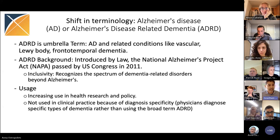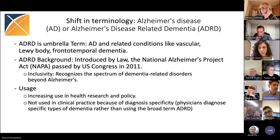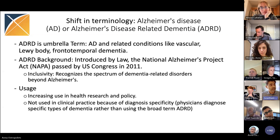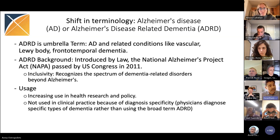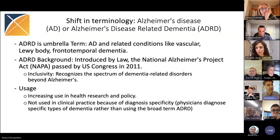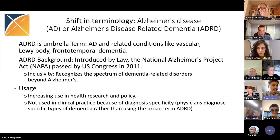What is ADRD? It is an umbrella term that not only talks about Alzheimer's disease — which is about 85% of all dementias — but also the other types of related dementias, like vascular dementia, Lewy body disease, and frontotemporal dementia. Looking back in history, this starts around 2010–2011, when a law was passed in the U.S. — the National Alzheimer's Project Act passed by Congress in 2011 — that introduced a more inclusive term encompassing the spectrum of dementia-related disorders. We found increasing use of this terminology in the health research and health policy communities. But if you look at clinical textbooks, it's not as common, because physicians crave specificity when diagnosing dementia — they say this is Alzheimer's disease, this is Lewy body disease, this is vascular dementia, and do not use the term Alzheimer's disease-related dementia.